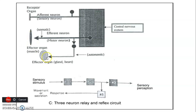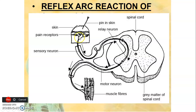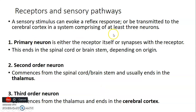You can see from the receptors on the skin, like pain receptors, then the afferent neuron carries information to the spinal cord. Then an efferent neuron carries information to either muscle or a gland, which are the effector organs. We have receptors and sensory pathways in neuroanatomy that you need to be very conversant with. A sensory stimulus can usually evoke a reflex response, as we have seen.